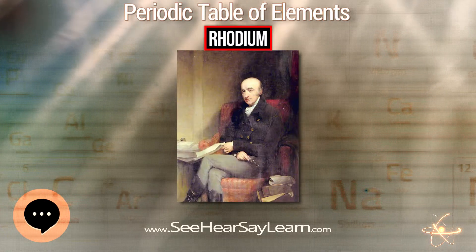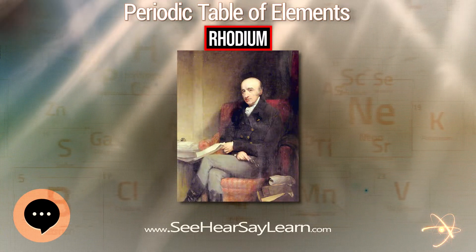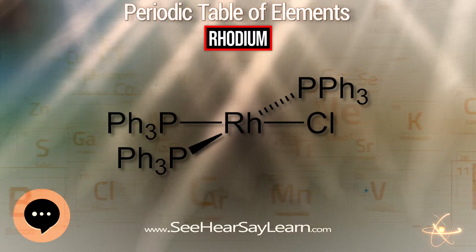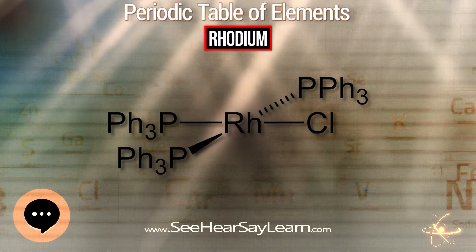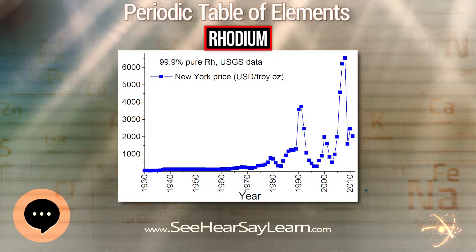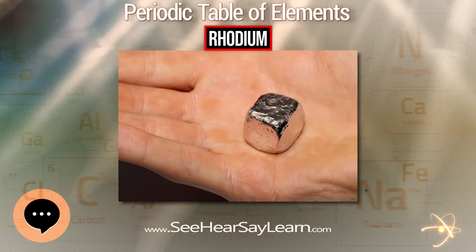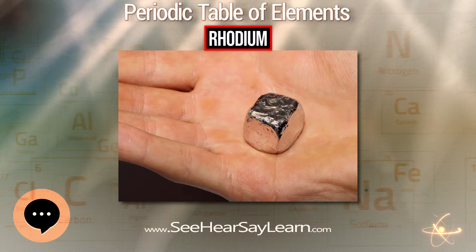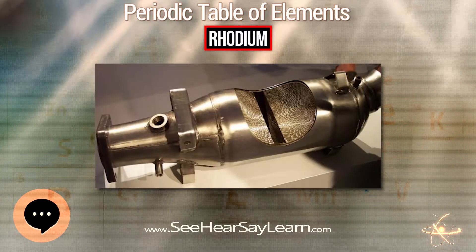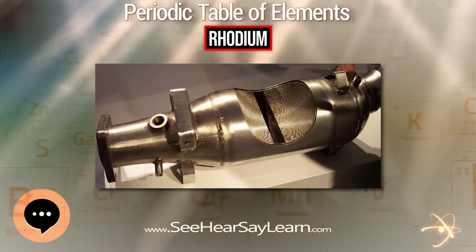Rhodium catalysts are also used to reduce benzene to cyclohexane. The complex of a rhodium ion with BINAP is a widely used chiral catalyst for chiral synthesis, as in the synthesis of menthol. Rhodium finds use in jewelry and for decorations; it is electroplated on white gold and platinum to give a reflective white surface at time of sale, after which the thin layer wears away with use.